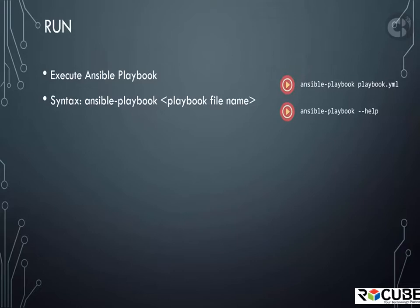Once you successfully build the Ansible playbook, how do you run it? It's very simple — execute the ansible-playbook command and specify the name of the Ansible playbook you just created. If you do ansible-playbook --help, you will get to know more about some additional parameters available for this command. We will go through some of them in a later section.